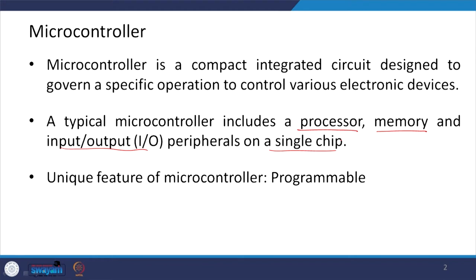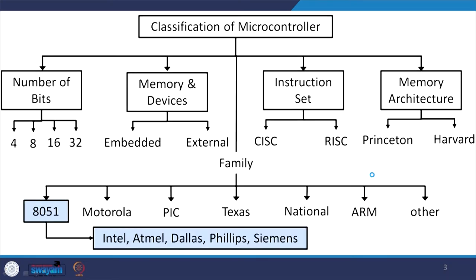A unique feature of microcontrollers is that they are programmable. Looking at the classification of microcontrollers: based on the number of bits, they can be 4-bit, 8-bit, 16-bit, or 32-bit. Then based on memory, there are embedded memory or external types. For instruction set, there is CISC type or RISC type.